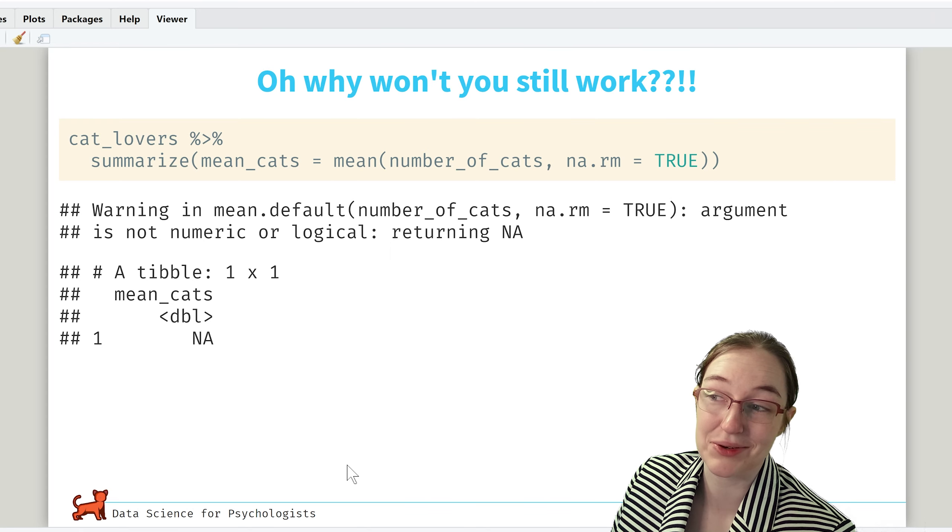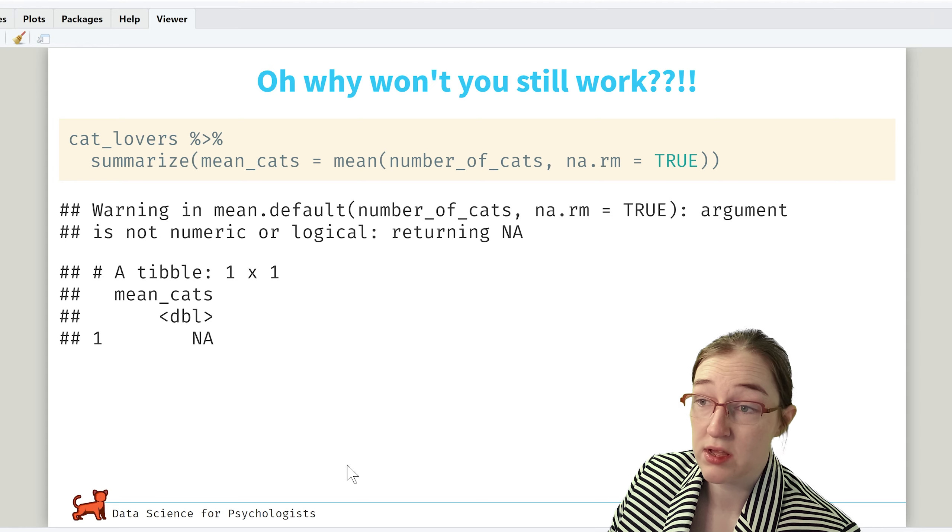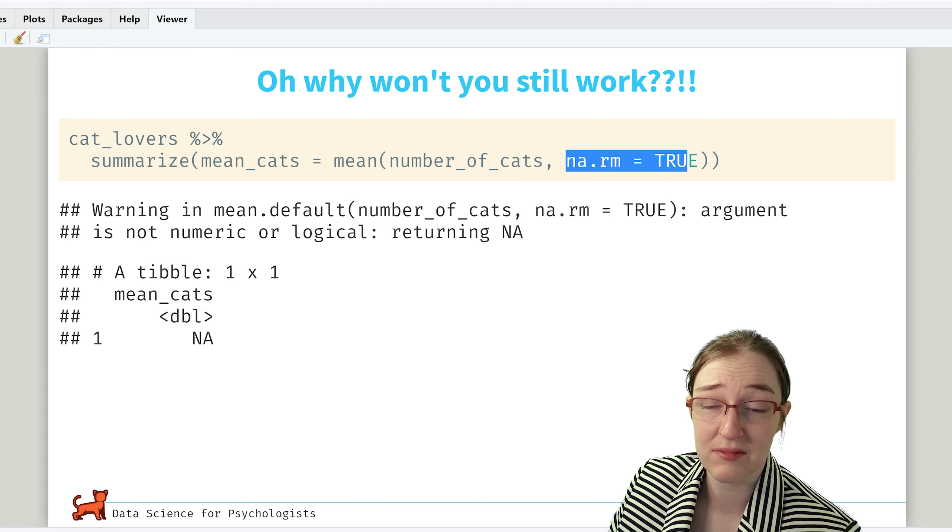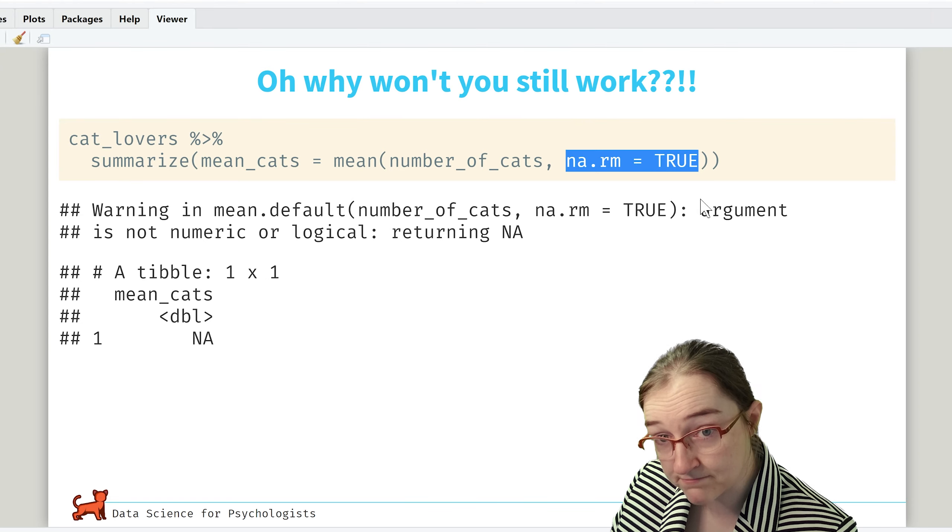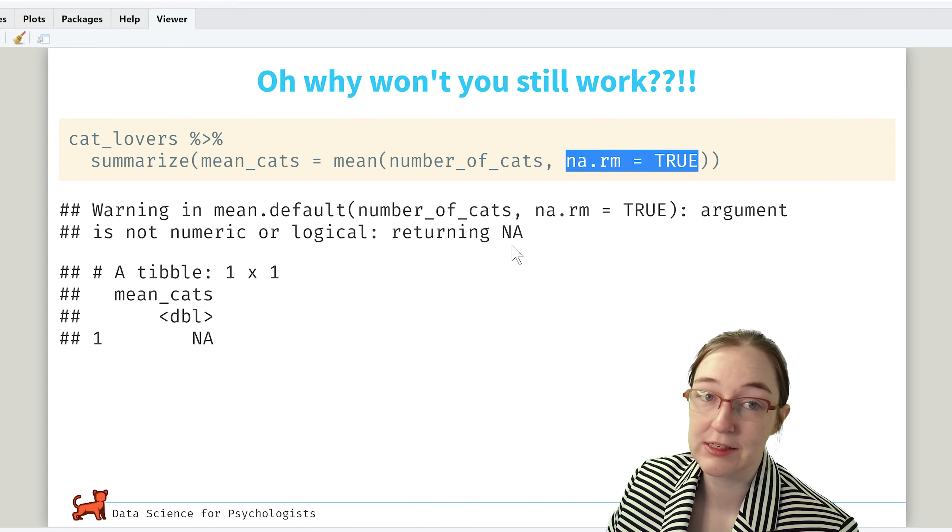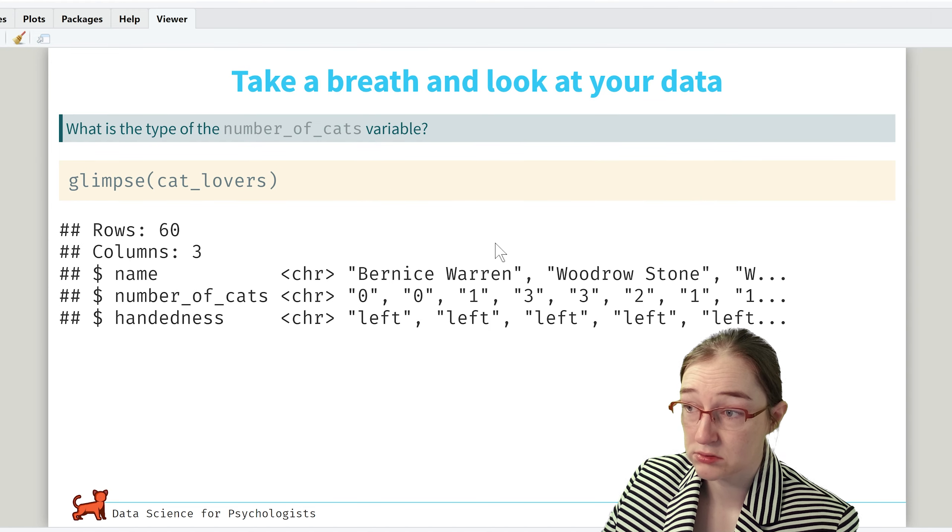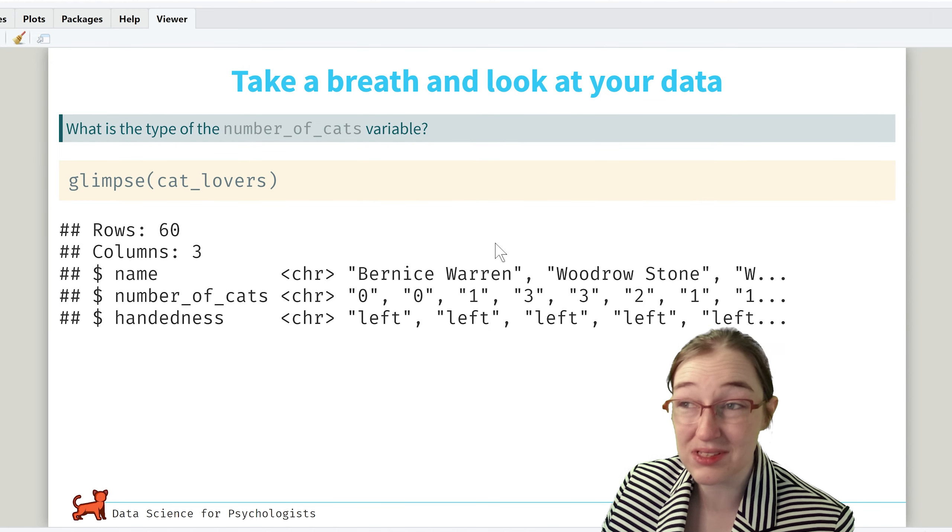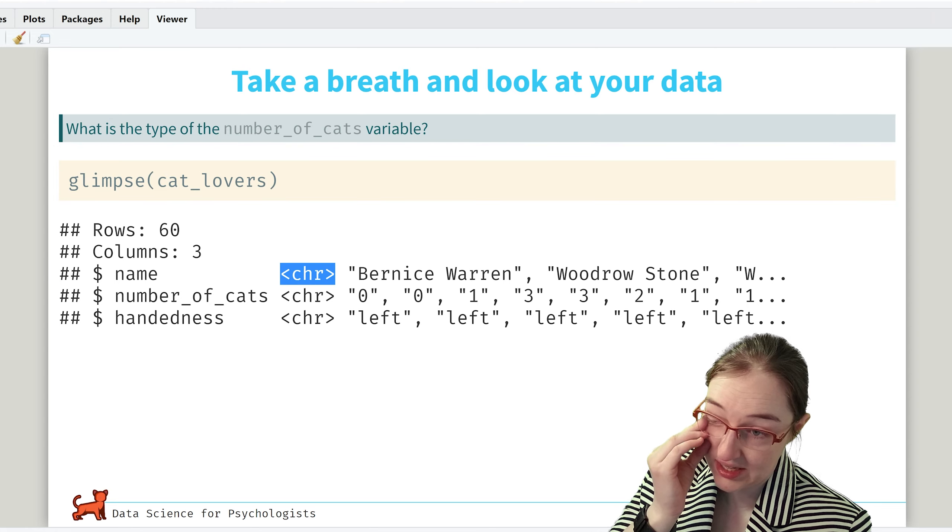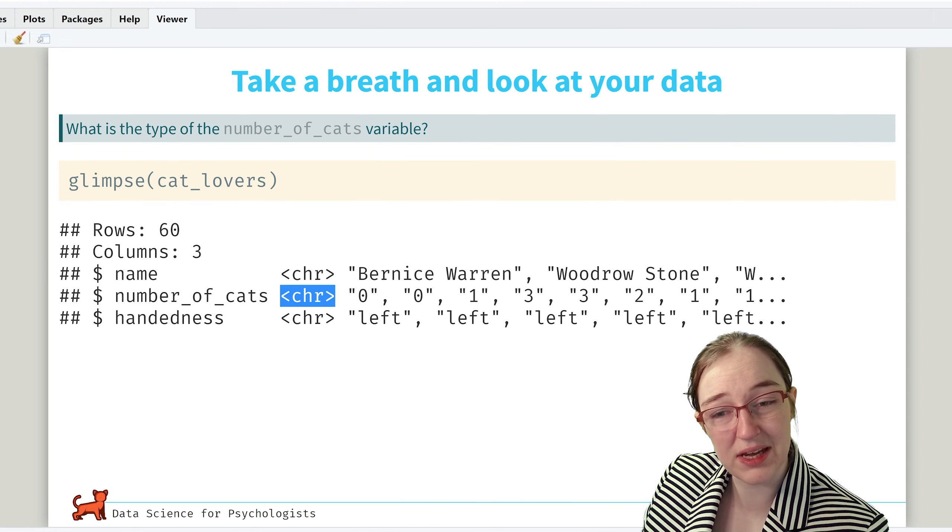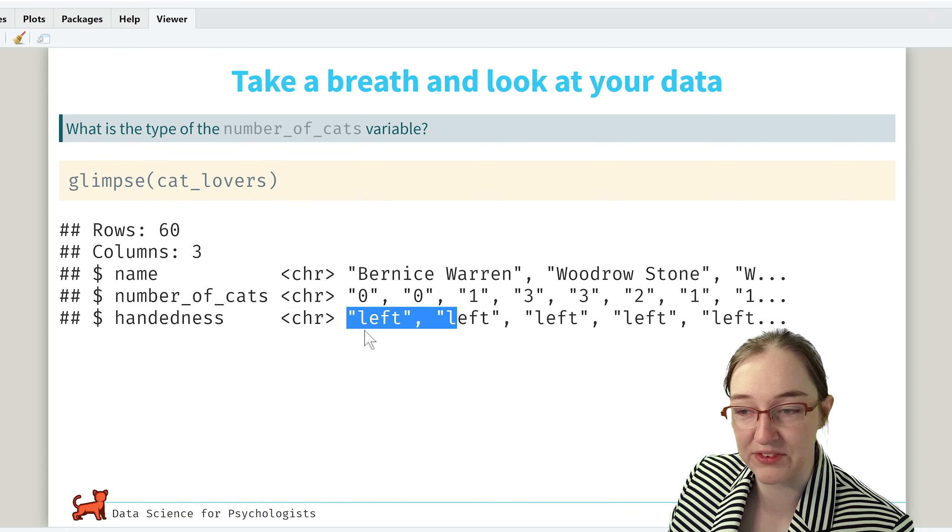Actually I lied. So here, the first thing to do, and this is a default that I find really annoying, is that we want to have it throw out missing data before. Because otherwise it gets very unhappy. But we get the same error. Argument is not numeric. So now we go and look at what the actual data type is with glimpse. And here we can see that we've got a character vector for names, also a character vector for numbers, as well as character for left and right.